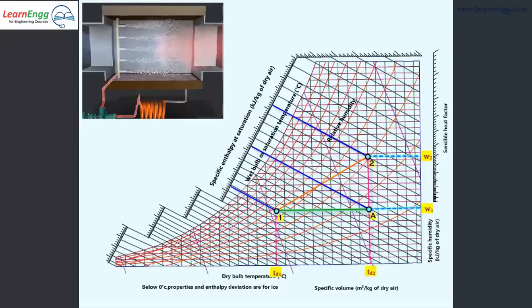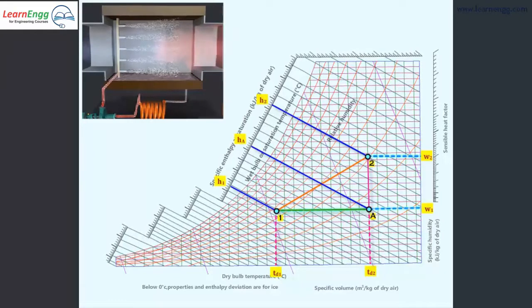State 2 is the final condition of air. In this process, dry bulb temperature, wet bulb temperature, and humid ratio of air are increased.